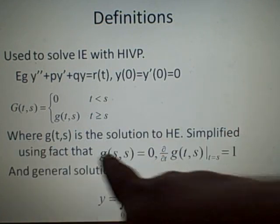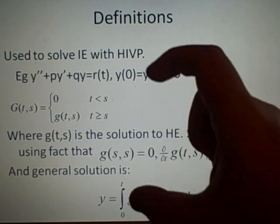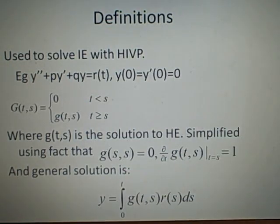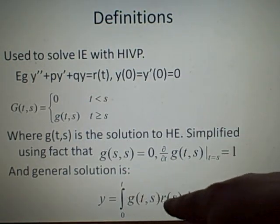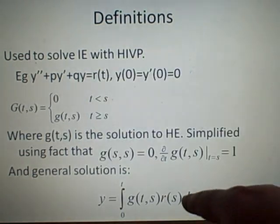And once you've done this, the general solution is y equals the integral from 0 to t, whatever interval you're in, of g(t,s) times r(s), not r(t), ds.